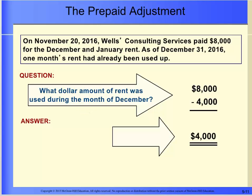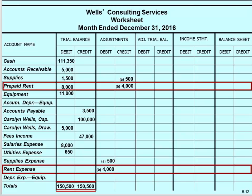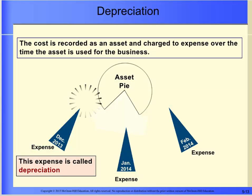Notice the letter A by both of the adjustments. By keying the adjustments with a letter reference, the accountant can better see the debit and credit amounts of the adjustment. For the expired rent adjustment, the company paid for two months' rent in advance. By the end of the month, one month had expired, so we need to reduce the prepaid rent account. One month of rent equals $4,000. Wells Consulting Services will debit the rent expense account by $4,000 and credit the prepaid rent account by $4,000. The letter B is placed next to both the debit and the credit.